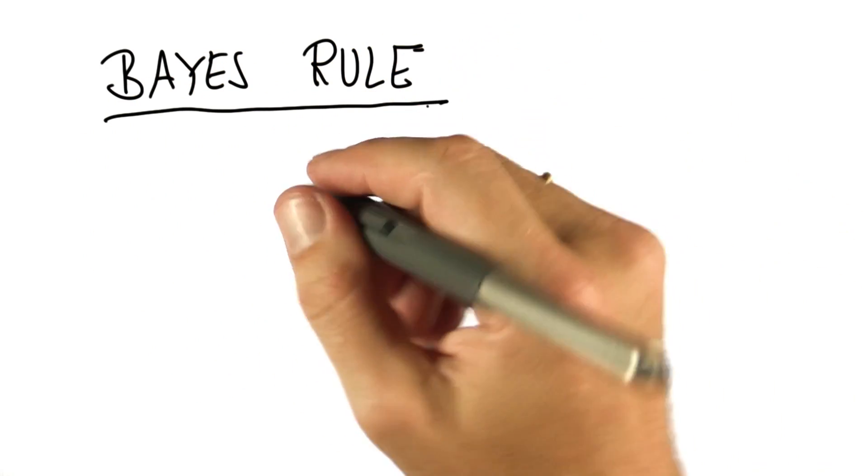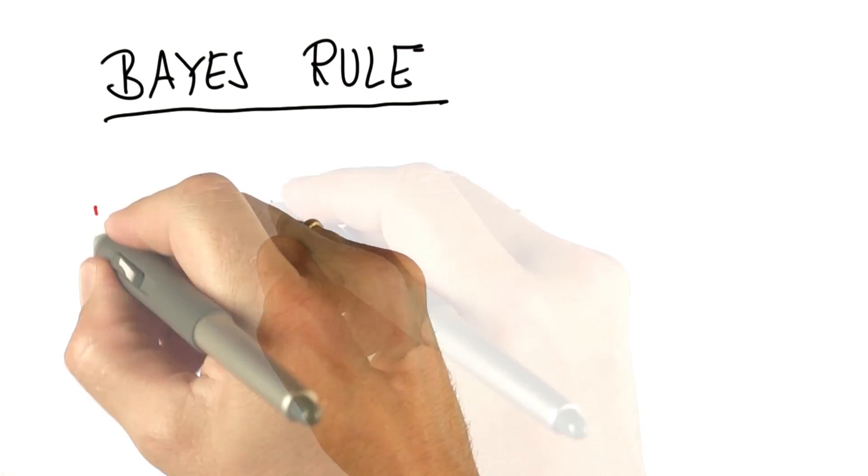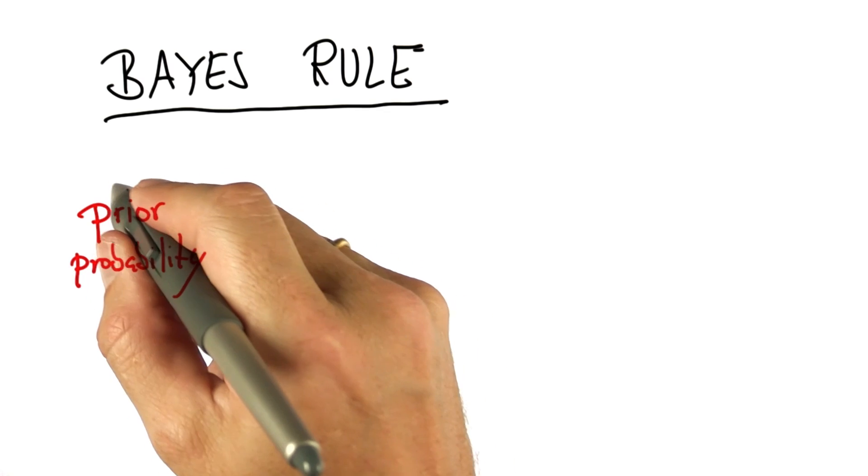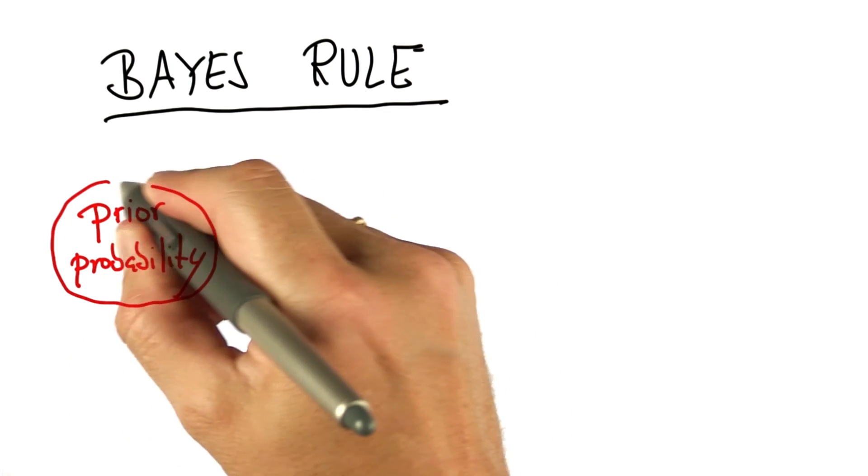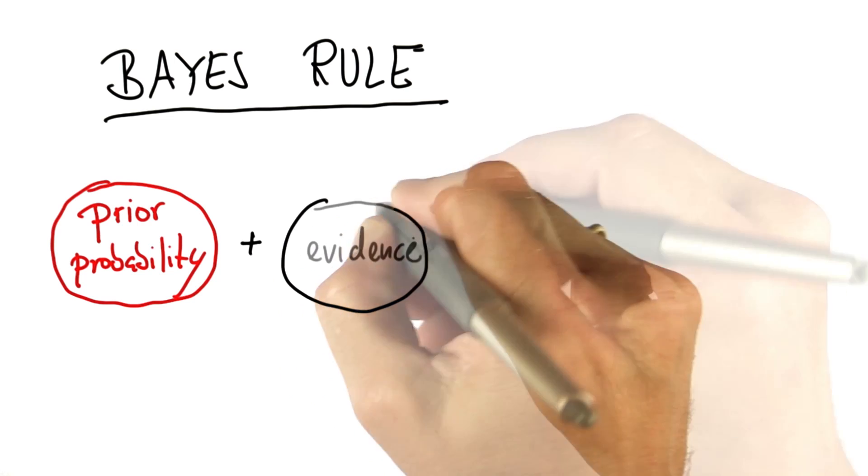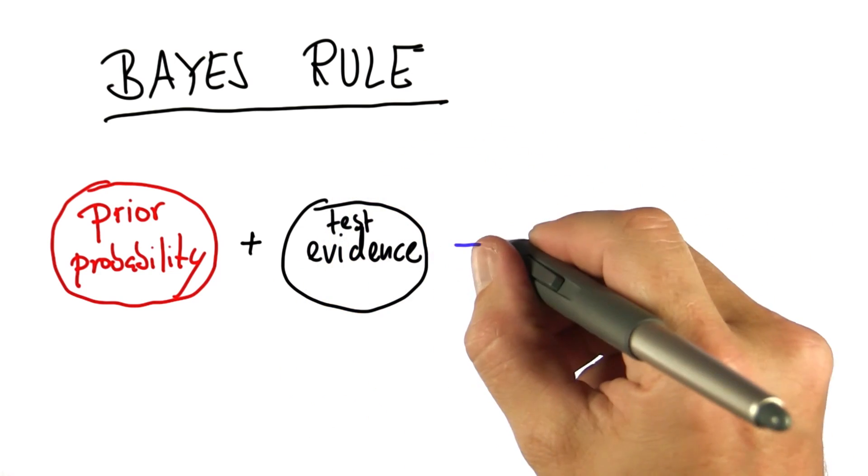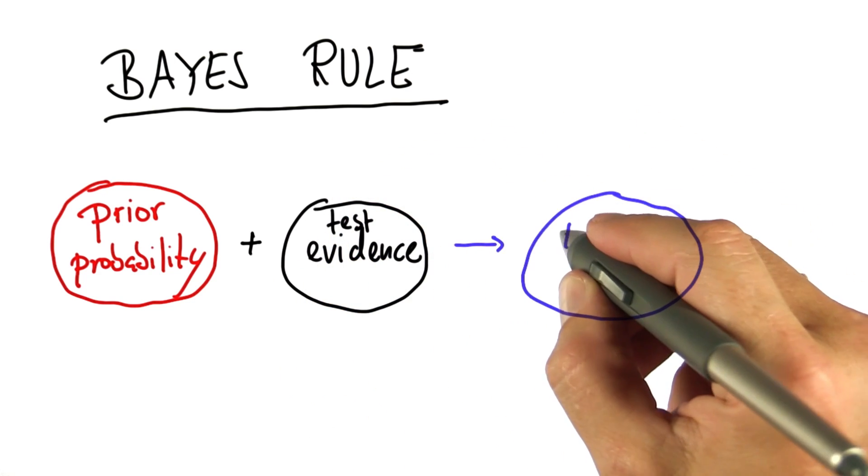So this is the essence of Bayes' rule, which I'll give to you in a second. There's some sort of a prior, by which we mean the probability before you run a test. And then you get some evidence from the test itself. And that all leads you to what's called a posterior probability.